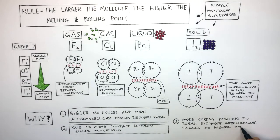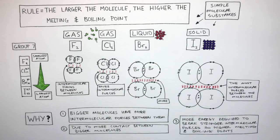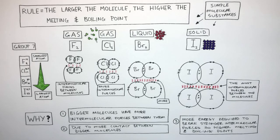Therefore, more energy is required to break the stronger intermolecular forces, so higher melting and boiling points. Because the molecules that make up chlorine are so small, they have the least intermolecular forces, so require the least energy to break these intermolecular forces, giving the lowest melting and boiling points. Iodine molecules are the biggest, so have the most intermolecular forces, therefore require the most energy to break them, giving the highest melting and boiling points.